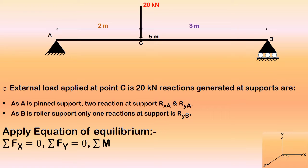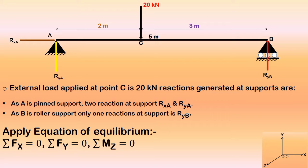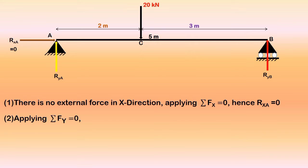As the figure is showing, the external load is 20 kN. By applying the equations of equilibrium we can get all the reactions. There is no external force in the x direction, so ΣFx = 0, meaning RxA = 0. We have two unknowns, RyA and RyB, which we solve using the equations of equilibrium, since this is a determinate structure where the number of unknowns equals the number of available equations.